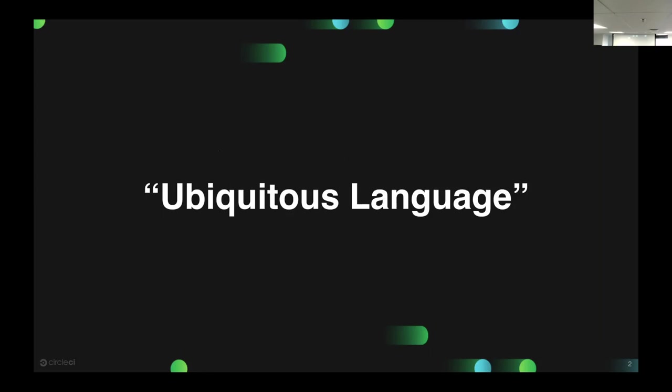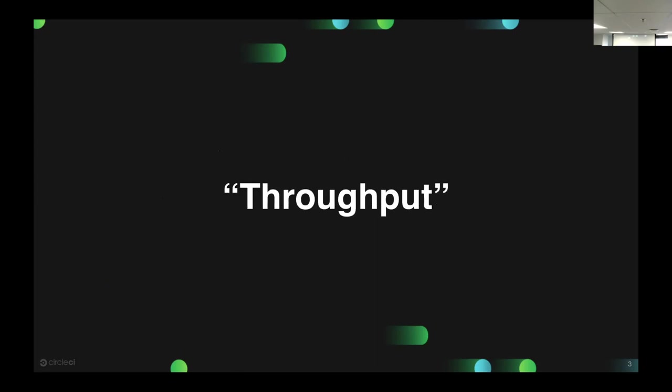If you've studied DDD at all, if you're a DDD proponent, then you know that when I'm talking about ubiquitous language, I'm talking about the way that Eric Evans thinks about stuff — using the same words from top to bottom of your stack, all the way out to the customer and all the way down to your code. And if you've studied Agile methods, you might recognize that we're a Kanban shop and not a Scrum shop because we talk about throughput and not velocity.